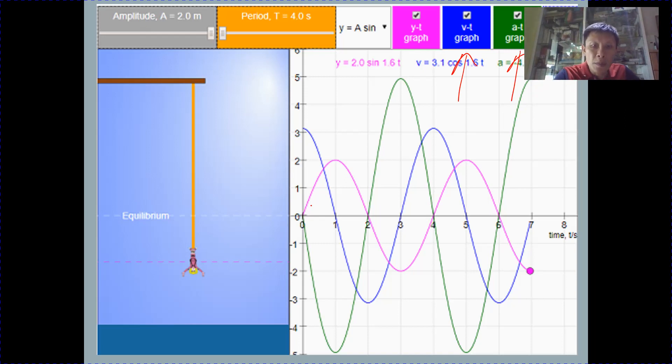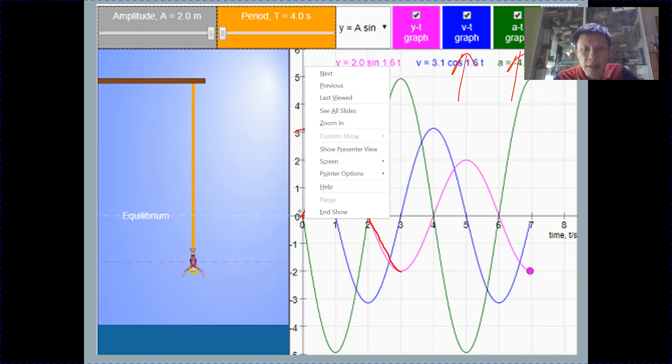So if your pink graph, the displacement time graph is a sinusoidal sine graph, the velocity time graph will be a cosine graph. And then your acceleration time graph would be a minus sine graph.